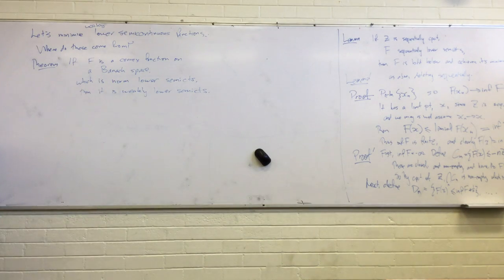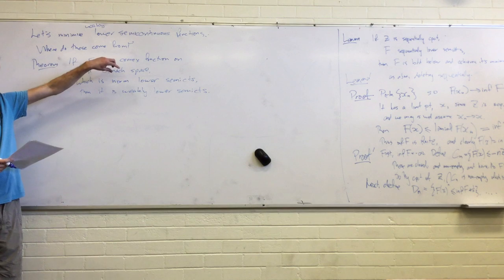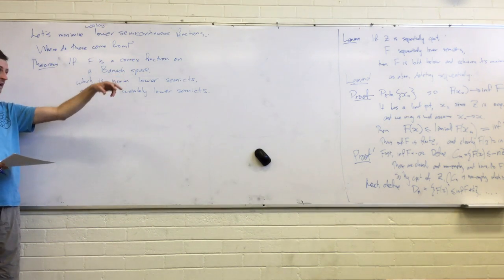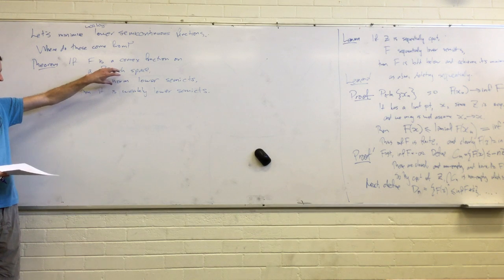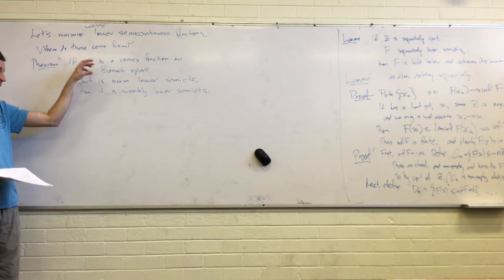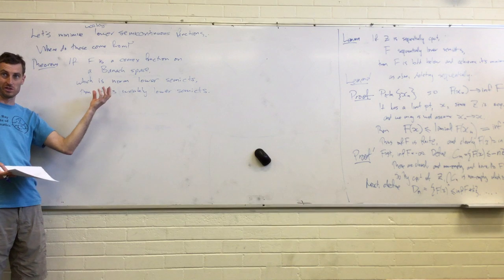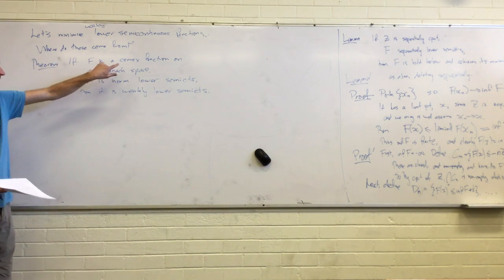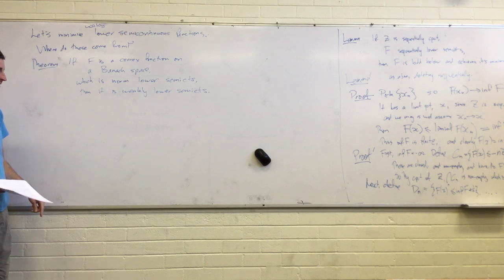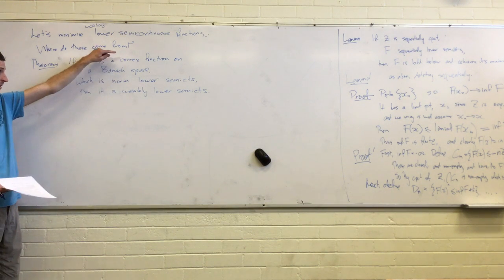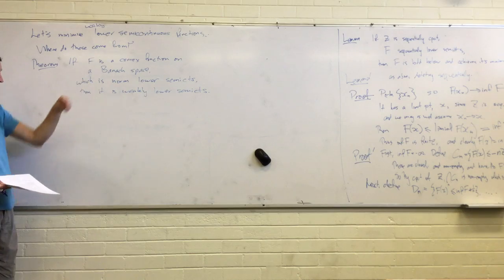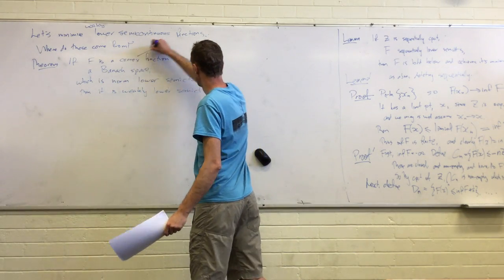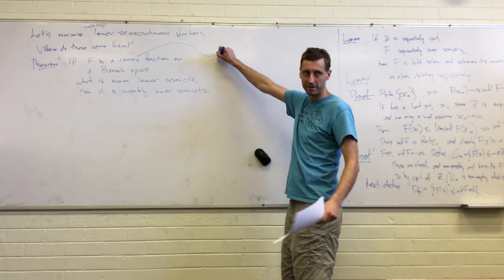Convex functions on a normed space, which are normally lower semi-continuous, are also weakly lower semi-continuous. So, we saw lots of examples of normally continuous functions that weren't weakly continuous. And in general, similarly, you expect that you can find normally lower semi-continuous functions, which are not, which when you pass to the weak topology stop being lower semi-continuous. But convexity prevents that from happening. Convex plus normal lower semi-continuous implies weakly lower semi-continuous. Is everyone happy with what convex means?